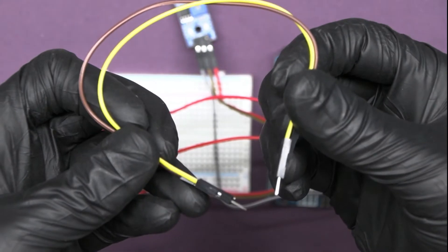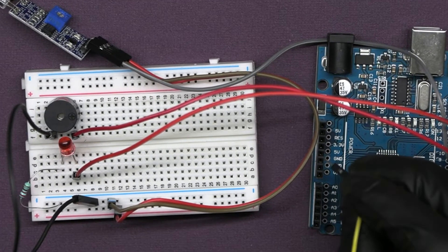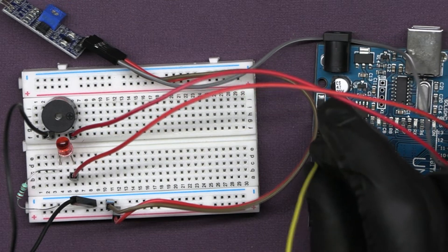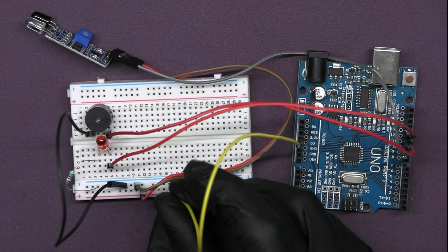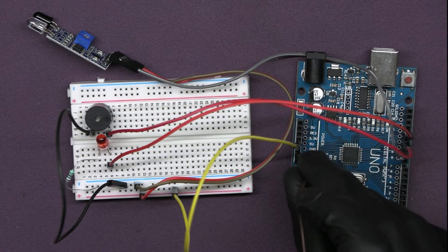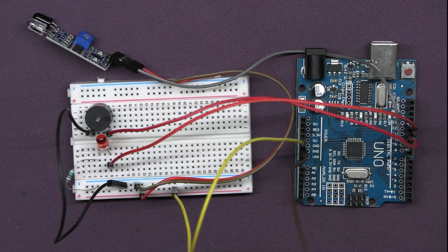At last, take two male to male jumper wires and connect them in between 5V of Arduino to the power bus of the breadboard. And GND of Arduino to the ground bus of the breadboard.